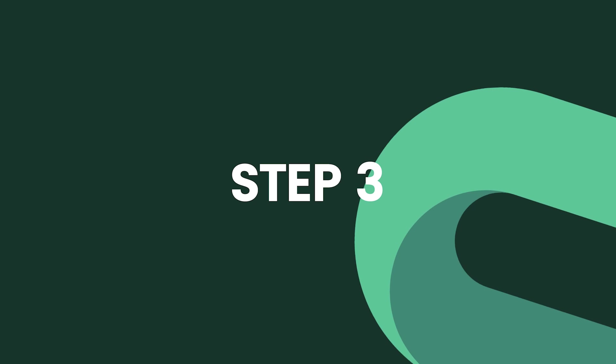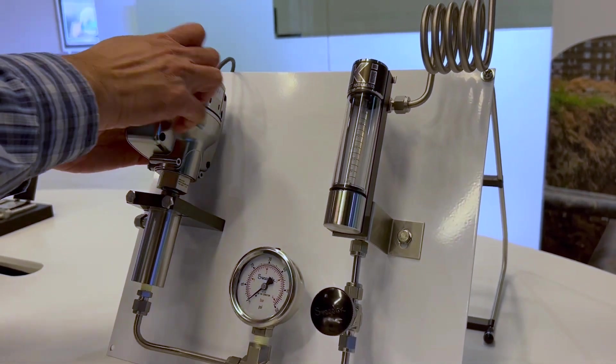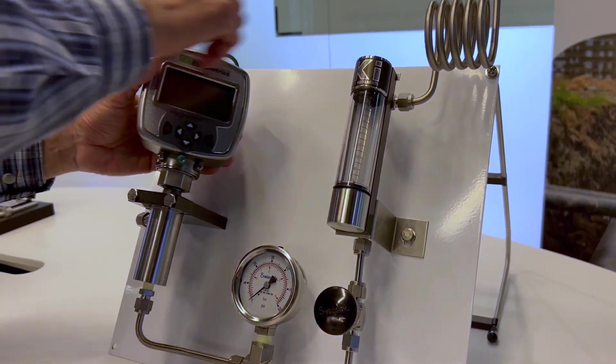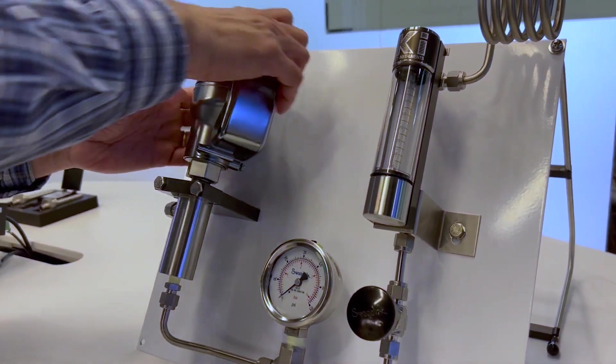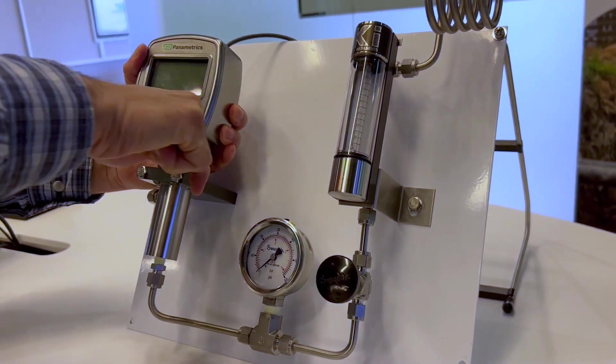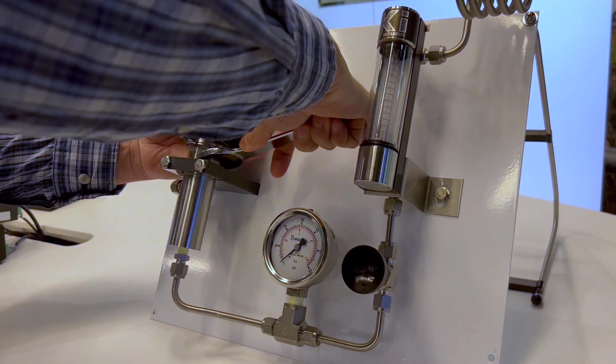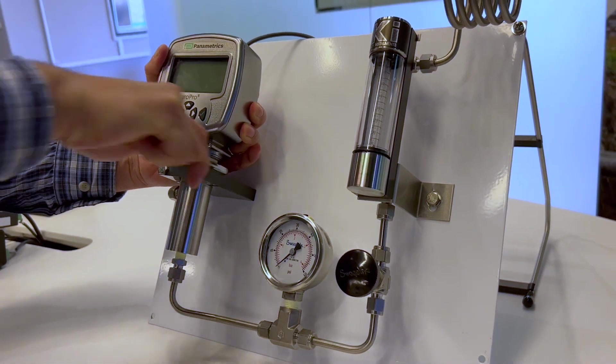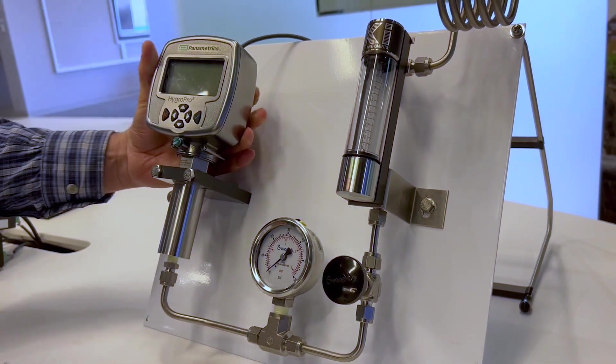Step 3: Install the HygroPro 2 into the process by threading it into the sampling port or sample cell. Please note the transmitter should be tightened using a 1⅛ inch wrench only on the hex nut of the probe until it is sealed on the O-ring surface. Do not torque the display head, but gently swivel it to face the correct direction after the probe is fully tightened.